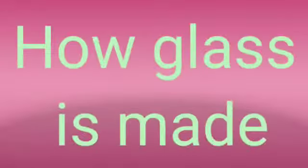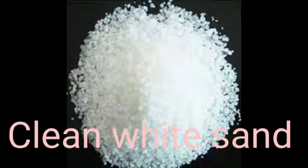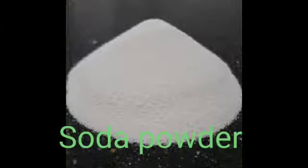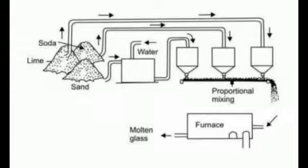Now we will see how glass is made. Glass that is used to make so many everyday things is a manmade material. Glass is made by heating a mixture of three things: clean white sand, and chemicals like soda and lime.